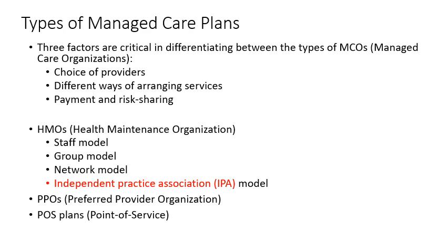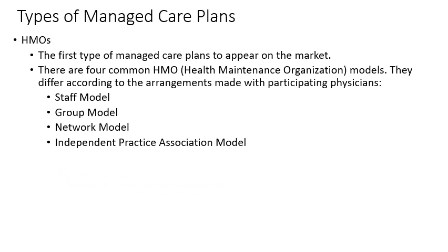HMOs, or health maintenance organizations, were the first type of managed care plan to appear on the market. There are four common HMO models that differ according to the arrangement made with participating physicians: the staff model, the group model, the network model, and the independent practice association (IPA) model. PPOs are preferred provider organizations, and POS plans are point of service plans.